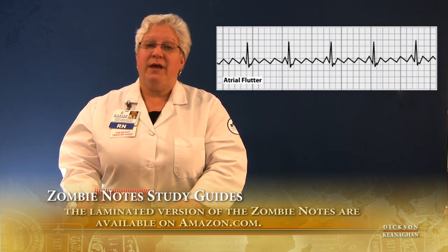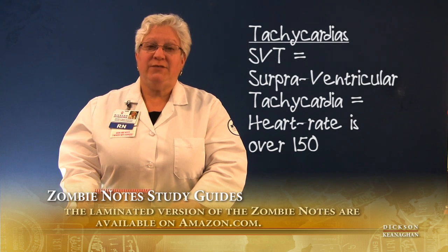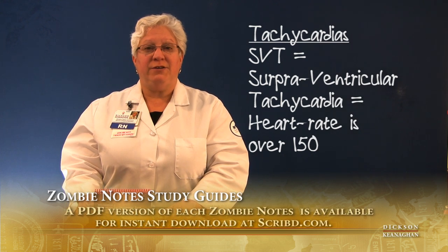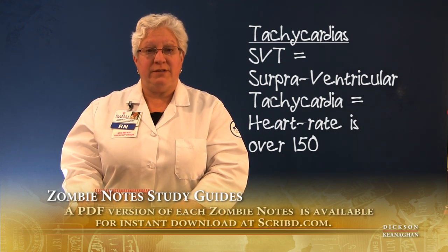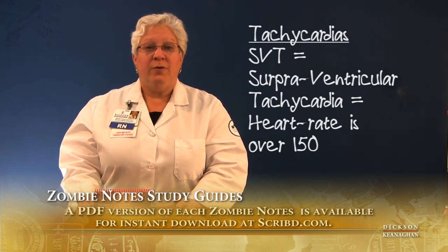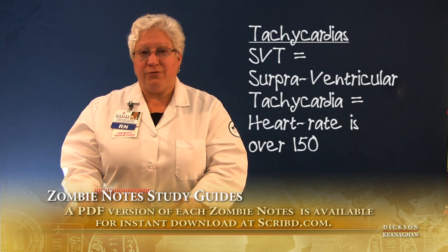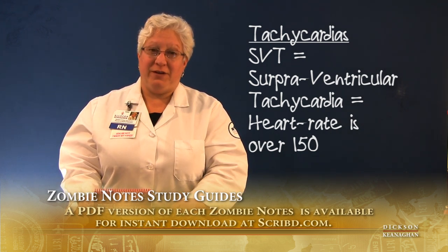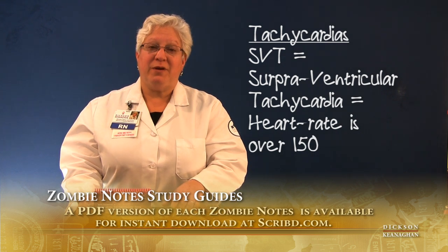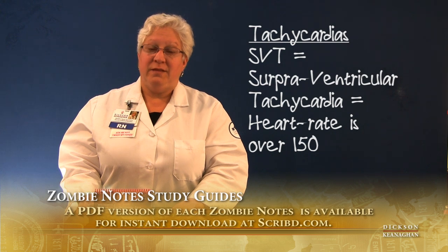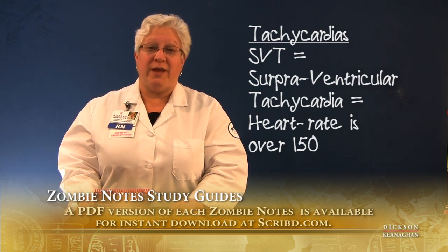Then there's SVT. SVT really consists of any of those rhythms — AFib, AFlutter, and even cases where the AV node fires at over 150 — and we call all those rhythms SVT; they're all grouped together under that title. When the patient becomes unstable due to their fast heart rate in SVT, the team can have the patient do vagal maneuvers.